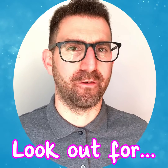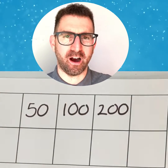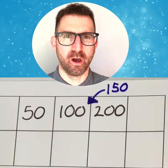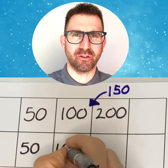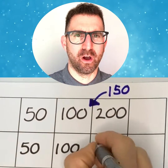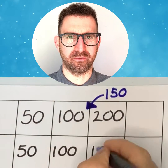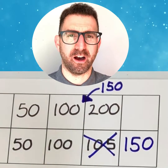Things to look out for: one, be careful when going from 100 to the next. For example we might say 50, 100, 200 and accidentally skip the number in between which is 150. Or we might say 50, 100, 105. While 105 is only five ones away from 100, we need to count up by five tens, which is 150.